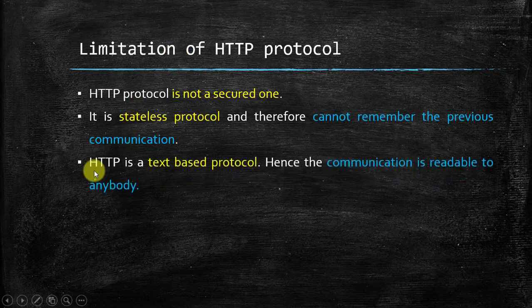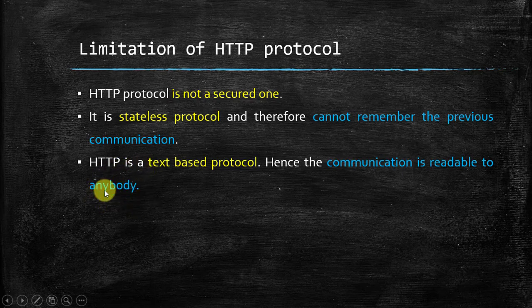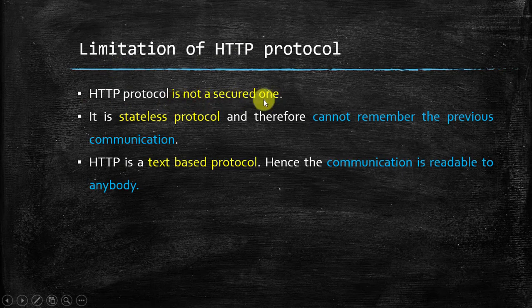The third limitation is that HTTP is a text-based protocol. Whatever information we send in the request message or response message, all that information is in plain text format, meaning the communication is purely in readable format. Anybody can read this information, so if we send sensitive information via HTTP, any third party can see and steal or breach our data easily. So HTTP being a text-based protocol is a significant limitation. In summary, HTTP has three limitations: it is not secure, it is a stateless protocol, and it is a text-based protocol.